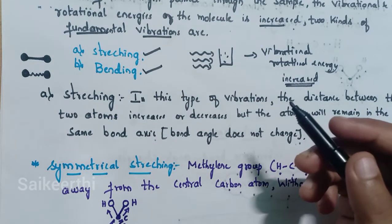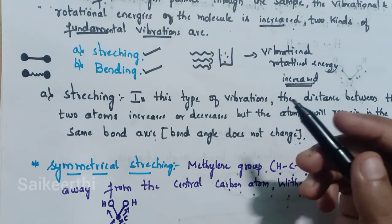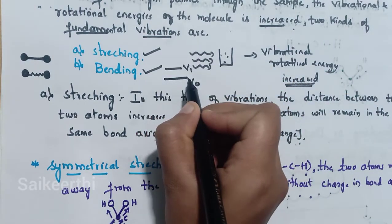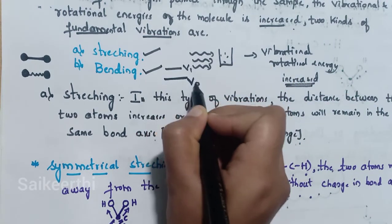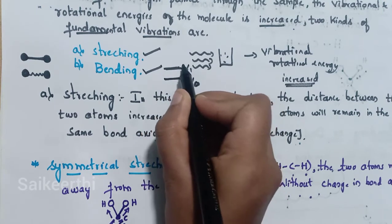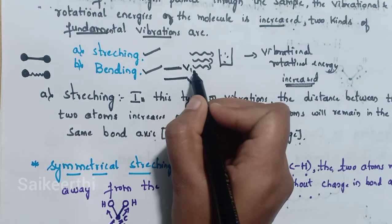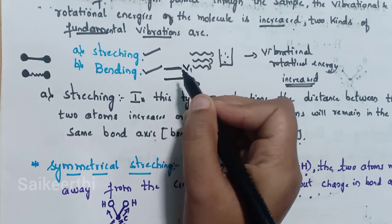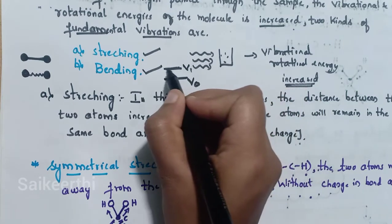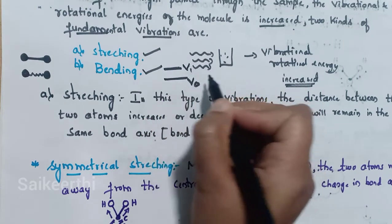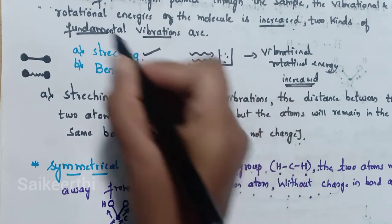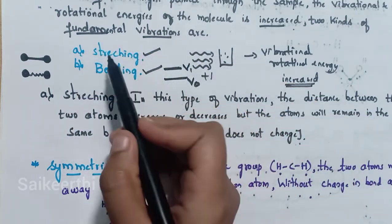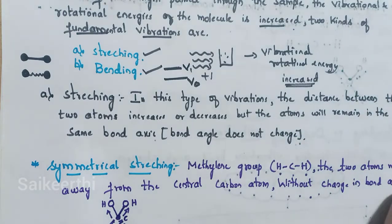If we consider the ground state as V0, then the excitation arises from V0 to the next immediate level V1. So the transition is delta V = +1. These are fundamental vibrations, that means stretching and bending are all fundamental vibrations.